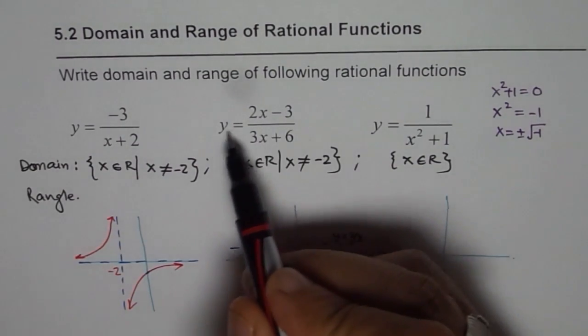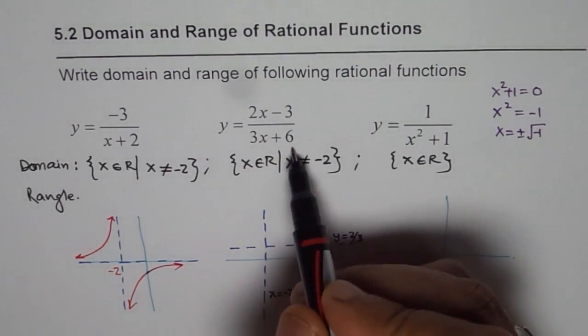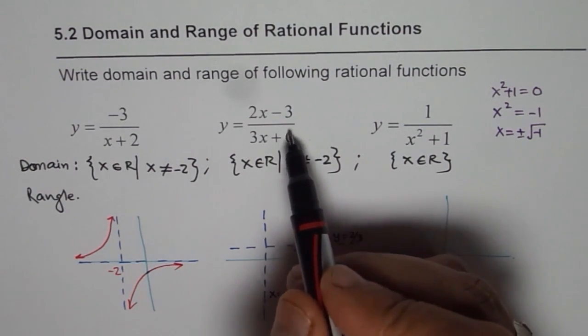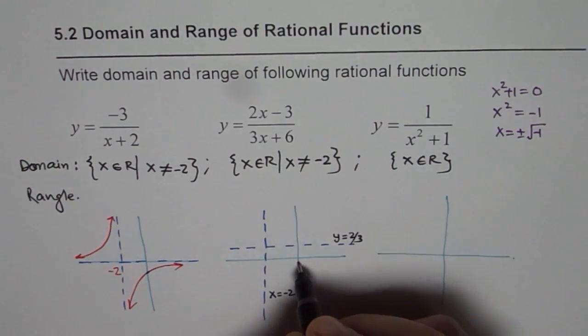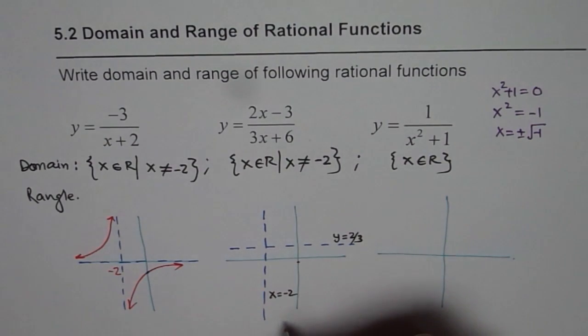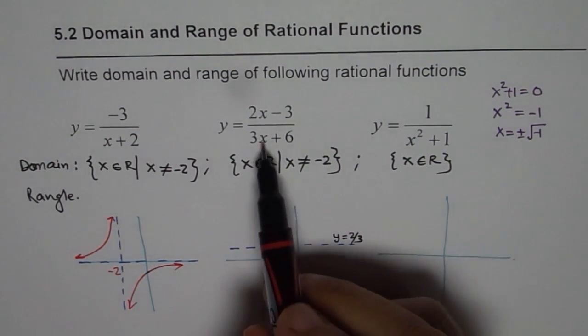If I put x as 0, I get the y intercept, which is minus 3 over 6, or minus half. So minus half is kind of here. So that is my y intercept.